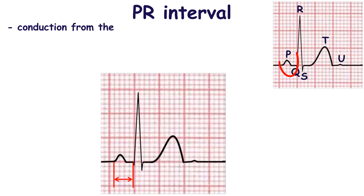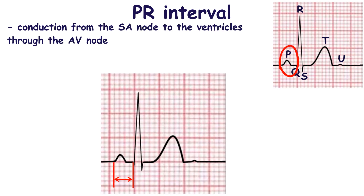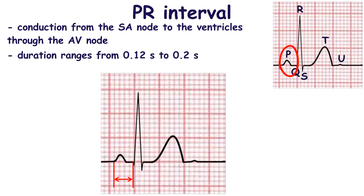The PR segment represents impulse conduction through the atrioventricular node and serves as an isoelectric line. The PR interval starts at the onset of the P wave and finishes at the onset of the QRS complex. The normal PR interval ranges from 0.12 seconds to 0.20 seconds.